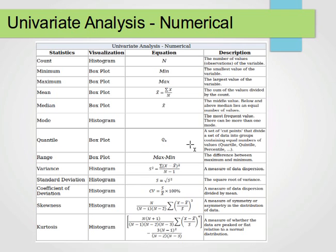We can find a quantile, which is basically a set of cut points that divide a set of data into groups containing equal numbers of values. It can be a quartile, splitting data into four quarters, or a quintile, splitting the data into five slices, 20% each, so at 20%, 40%, 60%, 80%, and 100%, or a percentile splitting at 10% each.